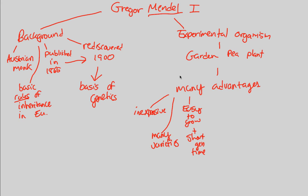Moving forward, we also notice that the garden pea plant has easily identifiable traits. Specifically, if we're studying genetics and the basic rules of inheritance, the traits that are inherited through genes must be easily identifiable — like color, like shape, like size. Those were all advantages the garden pea plant provided. It's very easy to see the color of the pea plant or measure the length of the flower. All of these components create a very easily identifiable set of traits.